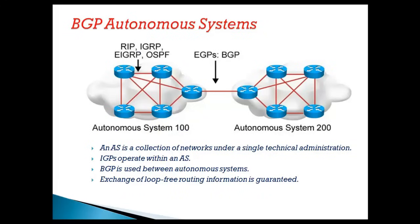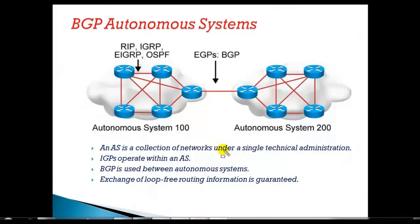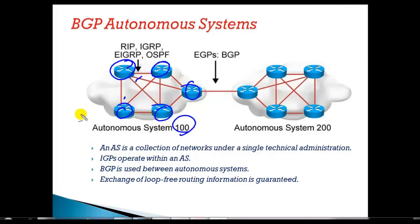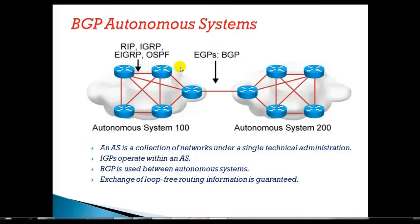From our basic CCNA studies we already learned what an autonomous system number is. It's a collection of networks or routers under a single common administrative domain. For example, an organization with specific locations — all part of the same organization — might be AS number 100, called ABC, and all the routers within that organization are represented by one autonomous system number.